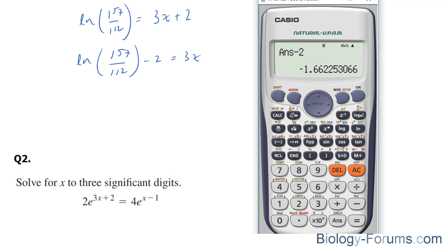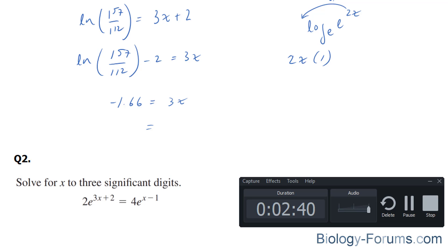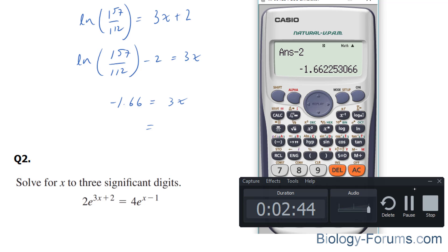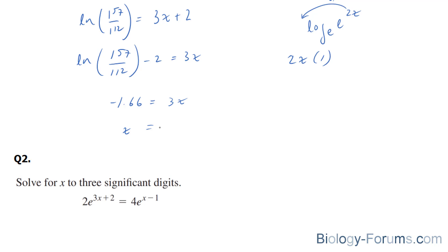We end up with negative 1.66 is equal to 3x. And we would divide both sides by 3. We end up with x is equal to approximately 0.55.